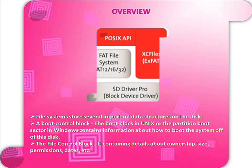File System Implementation Overview. File systems store several important data structures on the disk. A boot control block — the boot block in Unix or the partition boot sector in Windows — contains information about how to boot the system off of this disk.